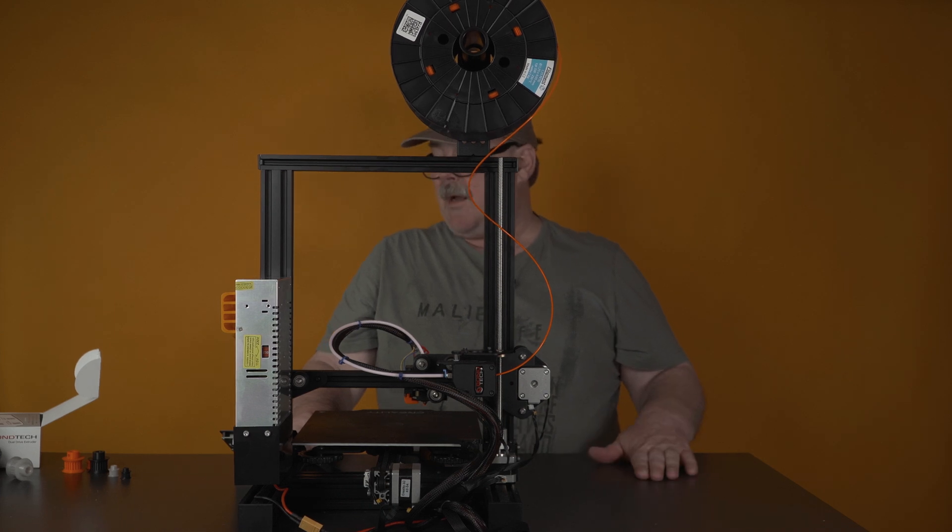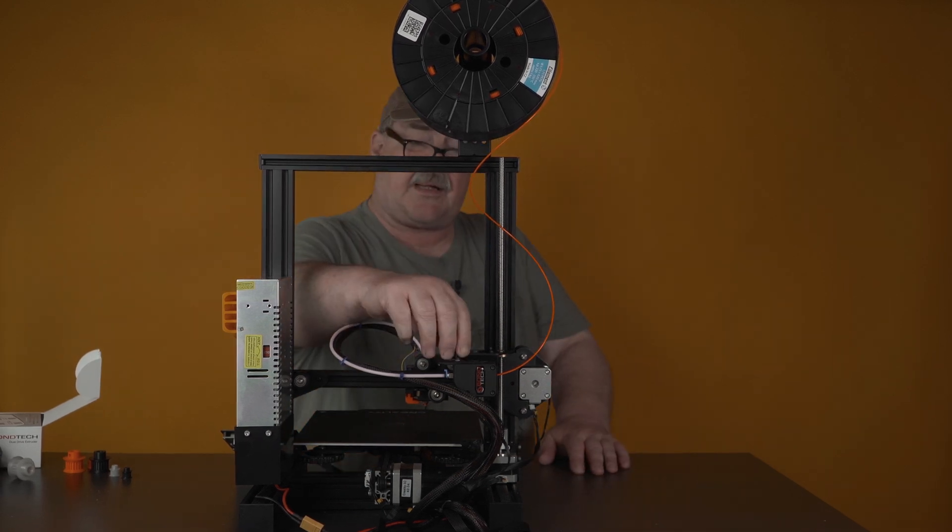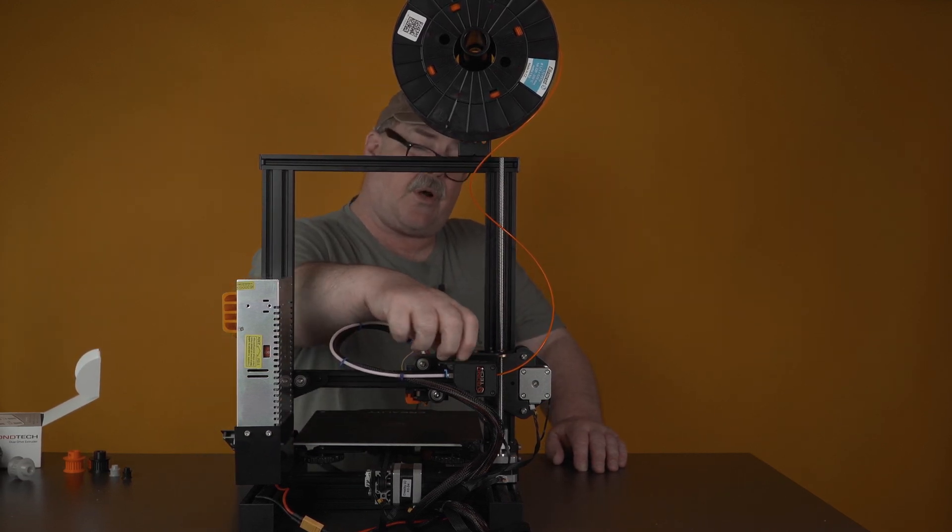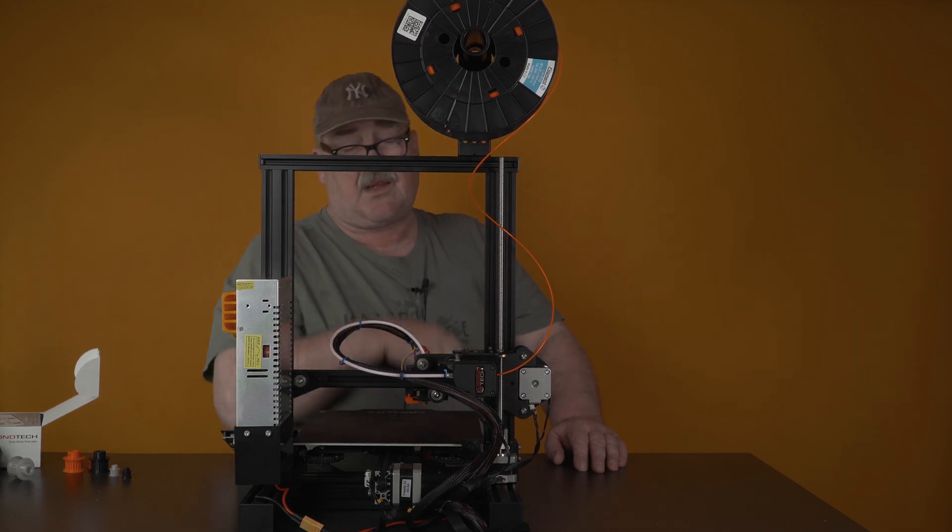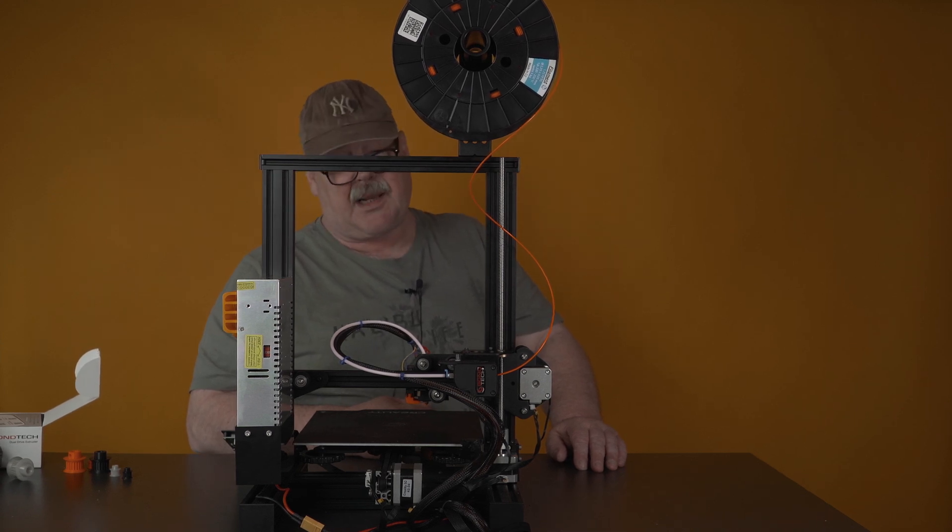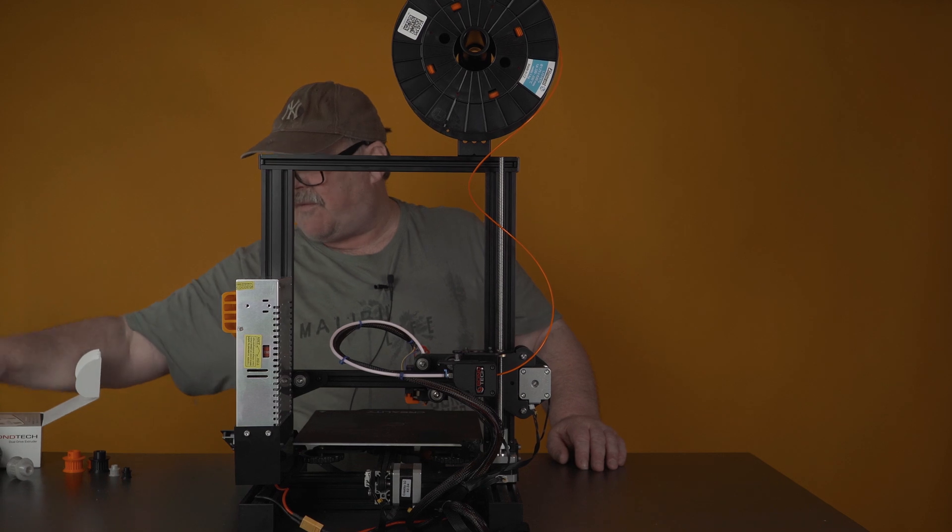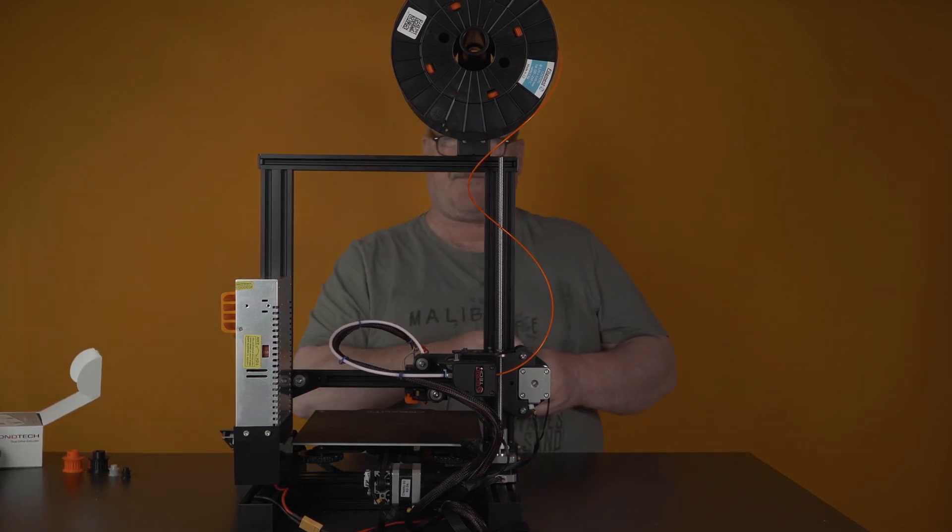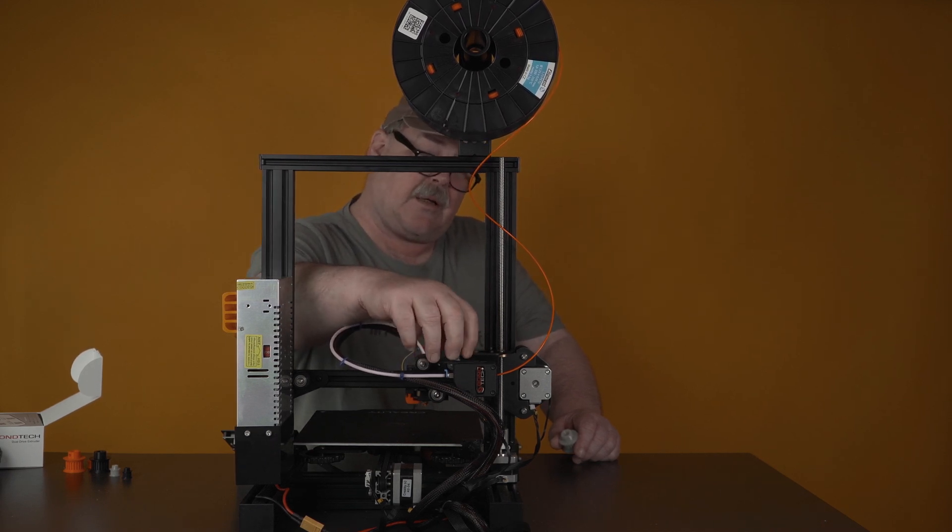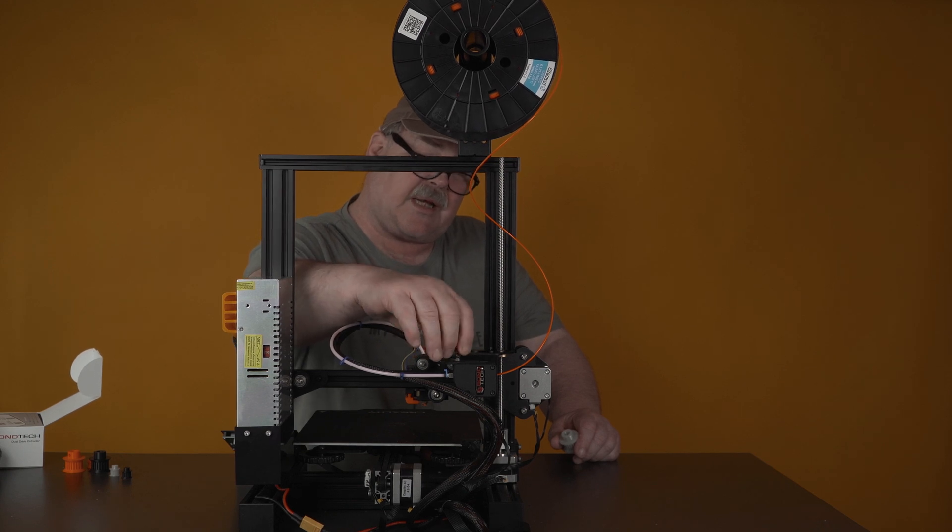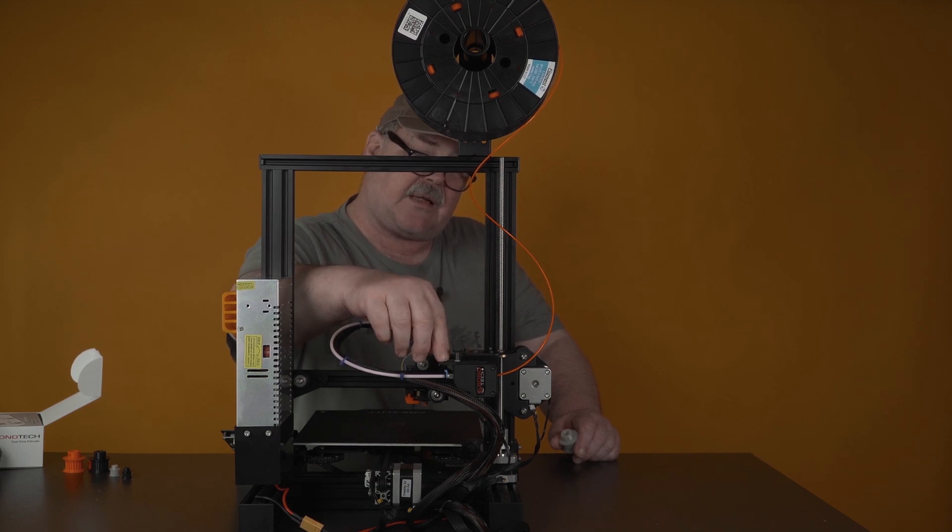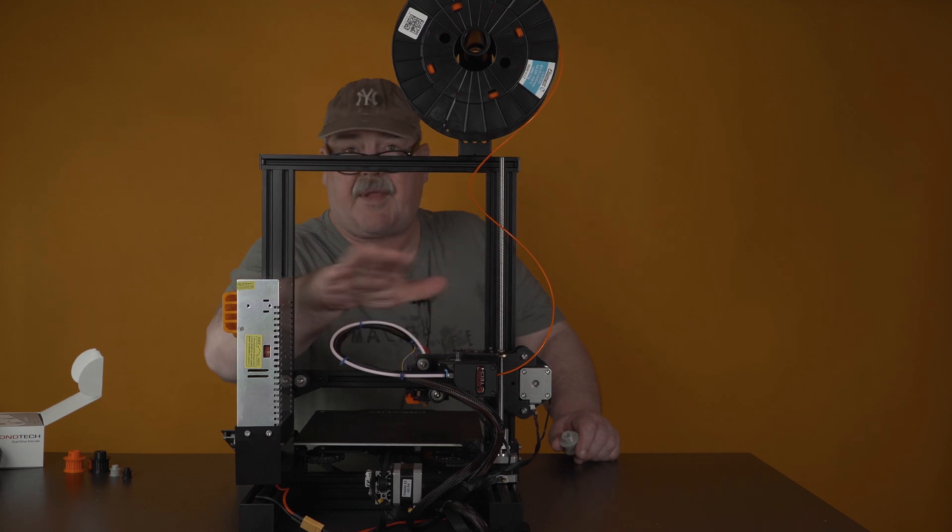So when I print PLA and PETG, I turn this totally down. And maybe open up just one turn. That's when I run the PETG and the same for ABS and PLA. If I run the flexible filament like this one here, I turn it totally up like this, so it's almost loose. And tighten it just so it starts. I feel that it is here, but it's still flexible here. And that's it.